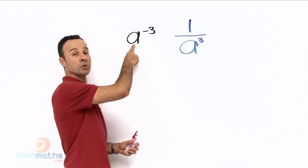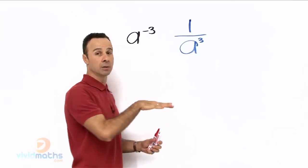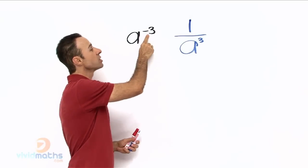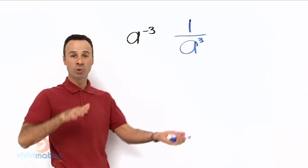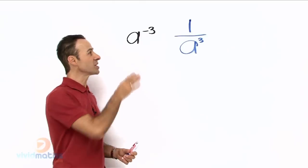It basically means the a or the pronumeral goes to the denominator on the bottom, the minus 3 goes over here and turns into a positive 3, and we stick a 1 on the top. In other words, we reciprocate it. So that is basically the theory.